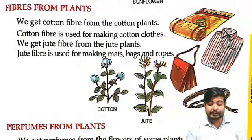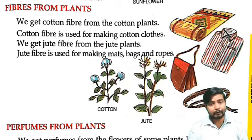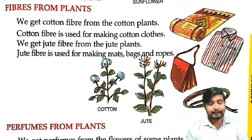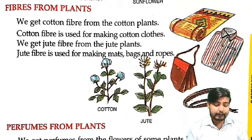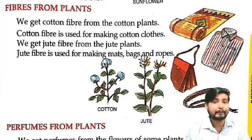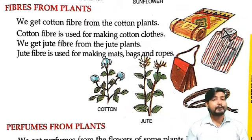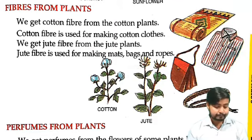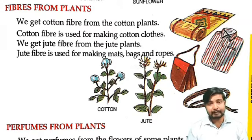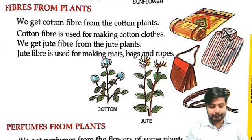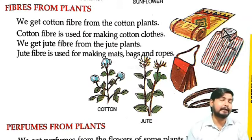Then fiber from plants. Plants se hum fiber bhi paate hain. Fiber se hum kya banaate hain? Hamara clothes, ghar ka mat, aur ropes. We get cotton fiber from the cotton plant. Cotton fiber is used for making cotton clothes. Then we get jute fiber from the jute plant. Jute fiber is used for making mat, bag, ropes. Toh jute bhi kahan se aata hai? Plant se hi aata hai.